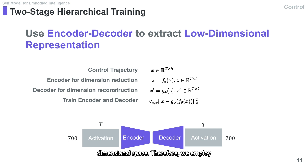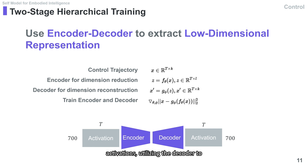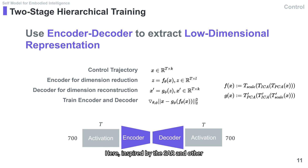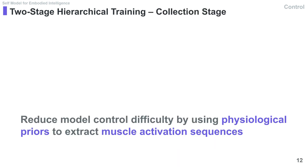We employ an encoder-decoder architecture to encode and decode the sampled muscle activations, utilizing the decoder to complete the reconstruction. Inspired by the SAR and other algorithms, we adopt a similar structure, which is a combination of PCA and ICA.